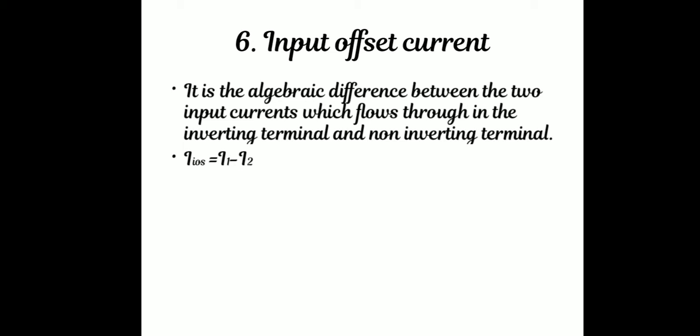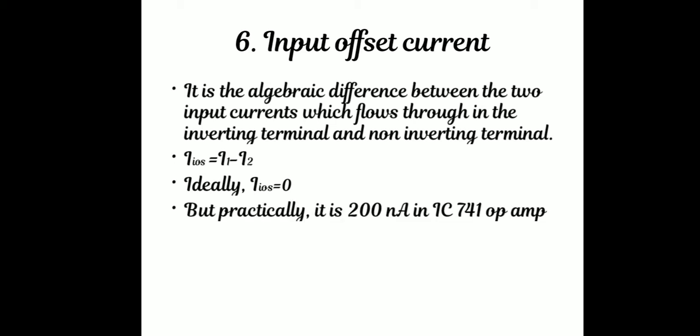The ideal input offset current is zero, which occurs when I1 is equal to I2. These are some basic details about the characteristics of the Op-Amp. If you like this video, please like it. Thank you, friends.